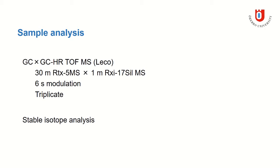All samples were then analyzed using comprehensive two-dimensional gas chromatography coupled to high-resolution time-of-flight mass spectrometry with a 30-meter non-polar column in the first dimension and a semi-polar column in the second dimension. The modulation period was six seconds, and each sample was analyzed in triplicate. We also did stable isotope analysis to get an idea about the trophic level of the biota species we had.